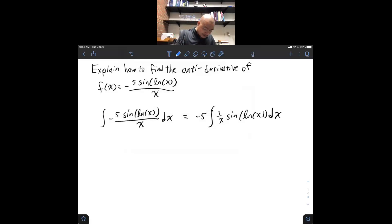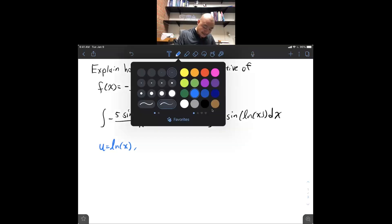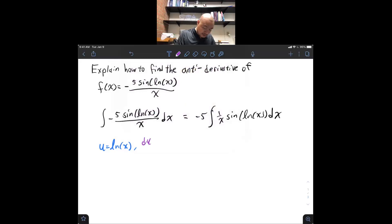If we let u be log of x, then what we have is du dx is 1 over x. And so, consequently, du is 1 over x dx.